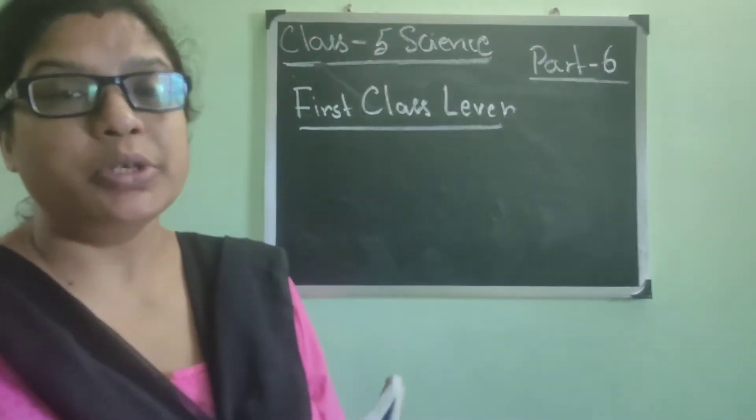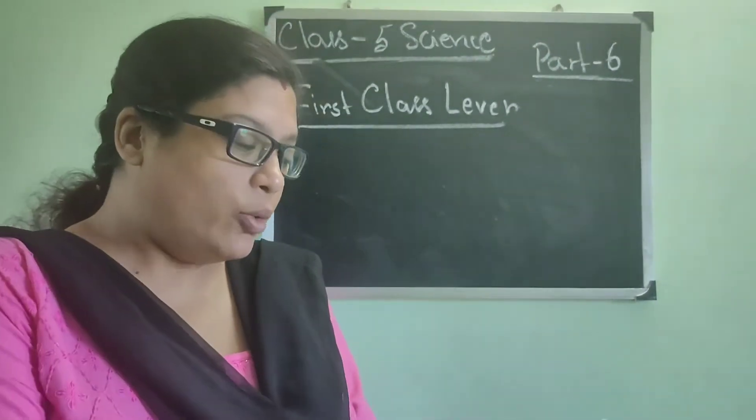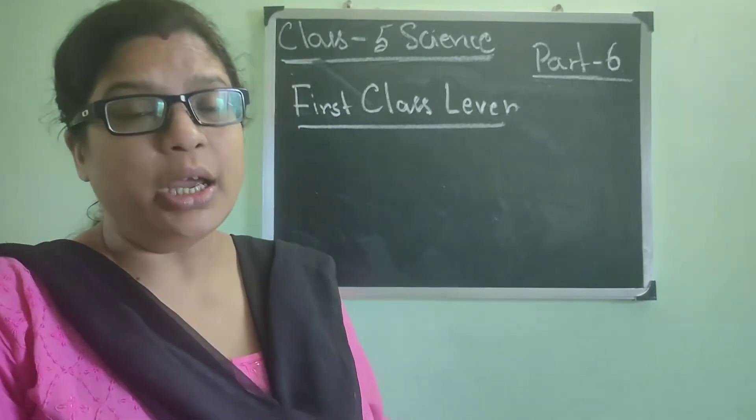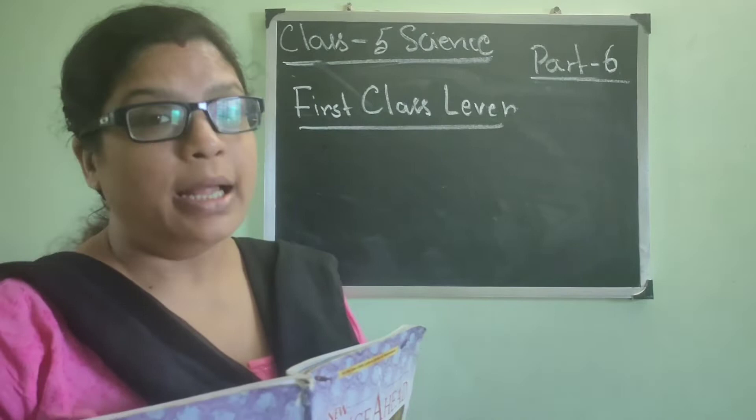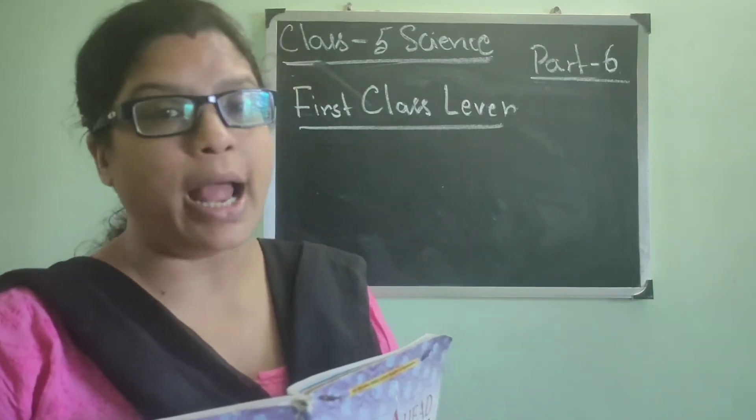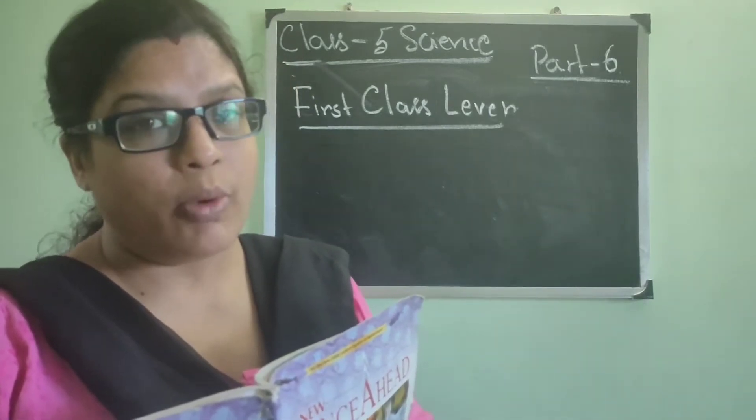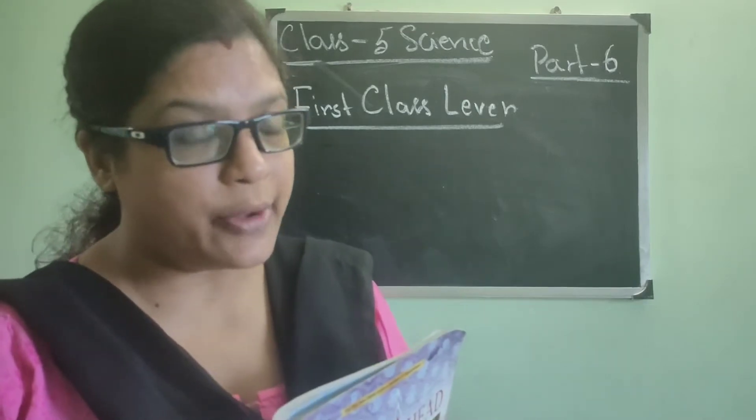Good morning class 5. Welcome to your science online class. We were doing chapter 4, work and energy, and we have started the part on levers. We have seen that all types of levers have three different parts: one is load, one is fulcrum, and another one is effort.